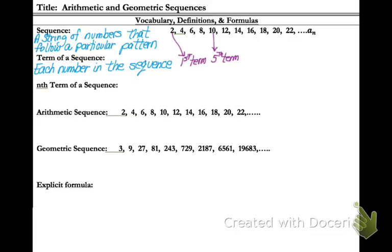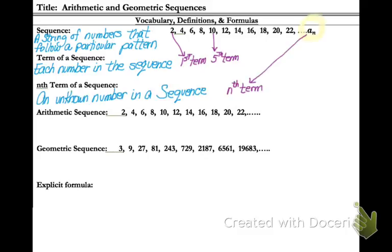Notice you have the first term, second term, third term, fifth term, so on and so forth. Sometimes you have what is called the nth term, and that is an unknown number in the sequence, and we actually write it as a sub n. Notice the n is down a little bit — we call that a sub n.